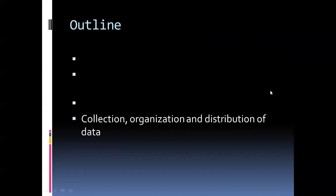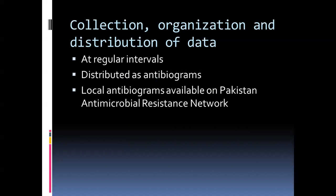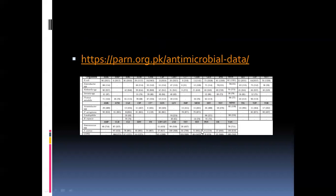Regarding collection, organization, and distribution of data: laboratories help mainly through antibiograms. At regular intervals — usually six months or one year — laboratories compile data from a large enough collection of organisms and report what percentage was resistant to certain relevant antibiotics. This data is distributed as antibiograms both internally at the institutional level and locally or countrywide through modalities such as the Pakistan Antimicrobial Resistance Network or the NIH. Some local antibiograms are available on parn.org.pk. They show an organism, an antibiotic, and the percentage resistant or sensitive in both inpatient and outpatient settings.